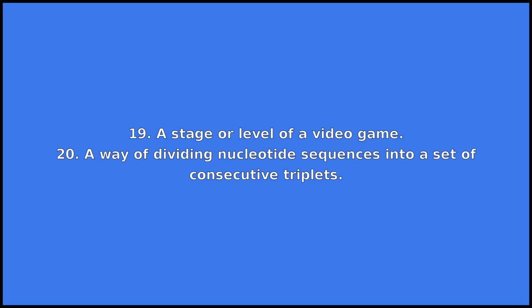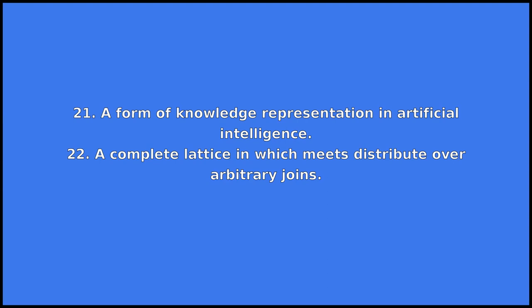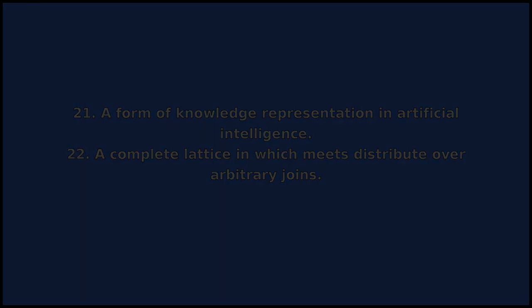20. A way of dividing nucleotide sequences into a set of consecutive triplets. 21. A form of knowledge representation in artificial intelligence. 22. A complete lattice in which meets distribute over arbitrary joins. As a name, frame can mean: Surname.